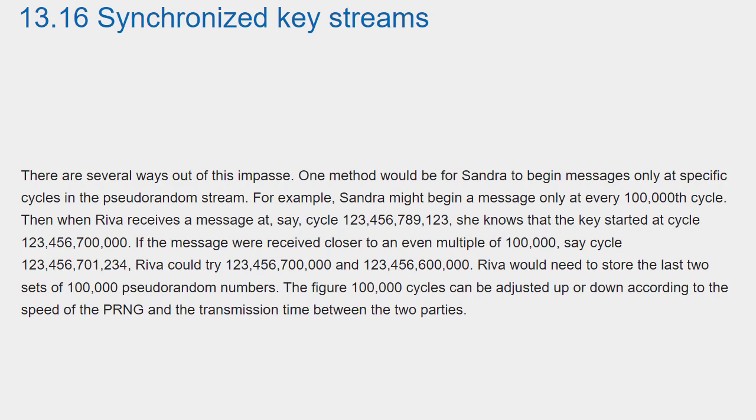Reva would need to store the last two sets of 100,000 pseudorandom numbers. The figure of 100,000 cycles can be adjusted up or down according to the speed of the PRNG and the transmission time between the two parties.